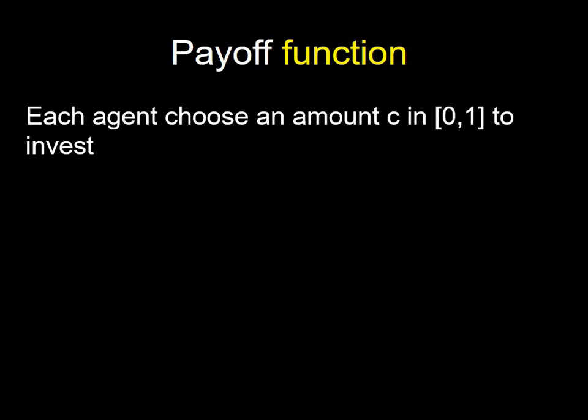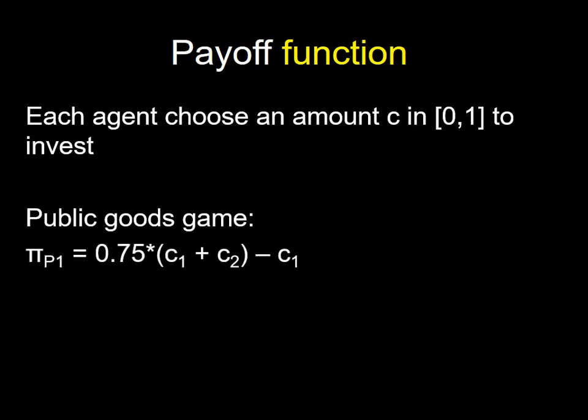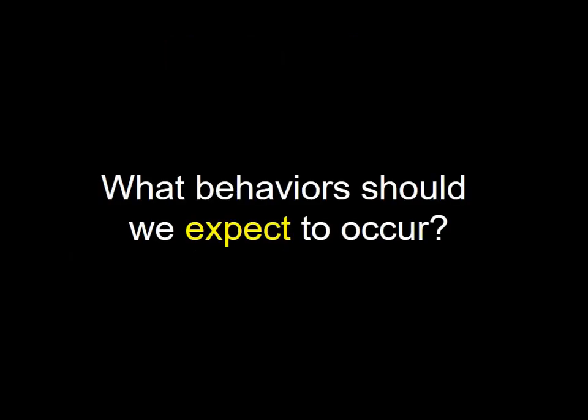More generally, you can use a payoff function rather than a discrete matrix. For example, in a public goods game — a continuous-choice prisoner's dilemma — each agent chooses a contribution between zero and one. The payoff for player one is the total investment by both players times some multiplier, minus player one's own contribution. This has the same structure as the prisoner's dilemma: it's personally costly to contribute because you lose one unit for each unit put in and get back only 0.75, but when both contribute they're both better off.